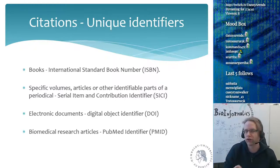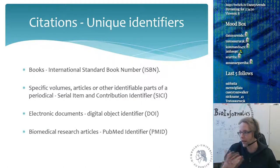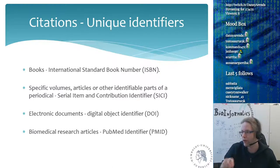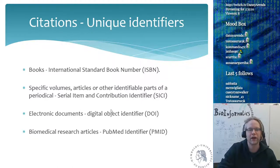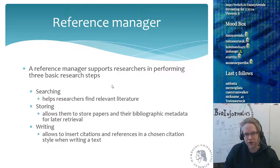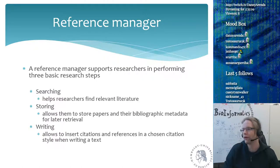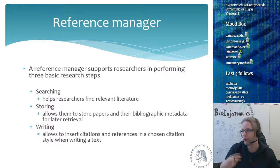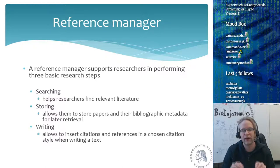Biomedical research articles also receive a PubMed identifier. When your article gets indexed by PubMed, it gets a PubMed ID in addition to its DOI. A reference manager supports researchers in three basic steps: searching relevant literature, storing that literature along with notes and PDFs, and inserting citations and references in a chosen style when writing a manuscript.